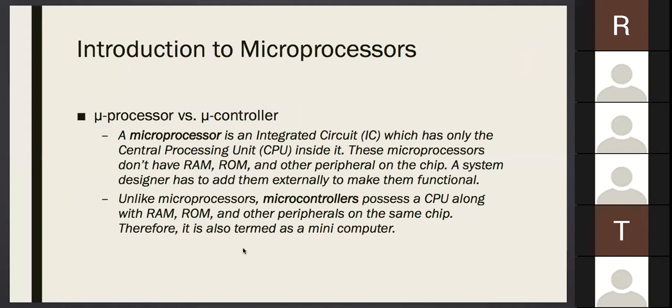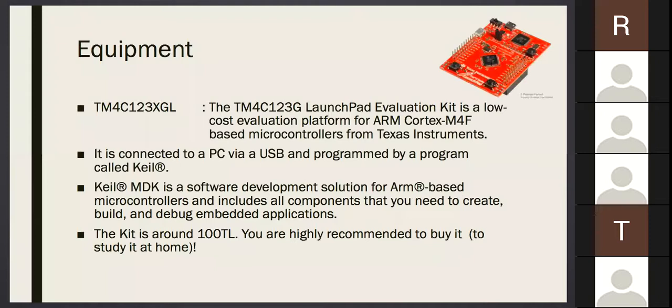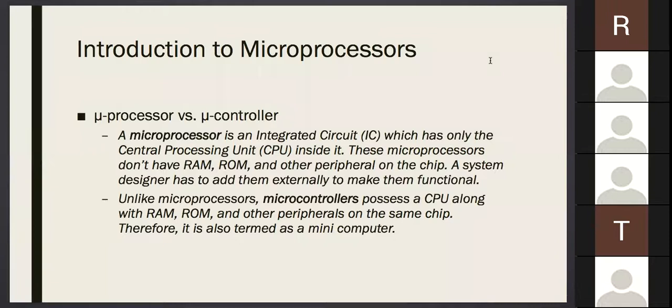Now we start with the difference between a microprocessor and a microcontroller. The microprocessor is an integrated circuit - this black thing is an integrated circuit - which only has a central processing unit, CPU inside. We have no idea what it is, but we are going to learn. These microprocessors don't have a RAM or ROM, which is a memory, which is something you can keep information in. How do we keep information? What are the bits? 0s and 1s. We'll learn.